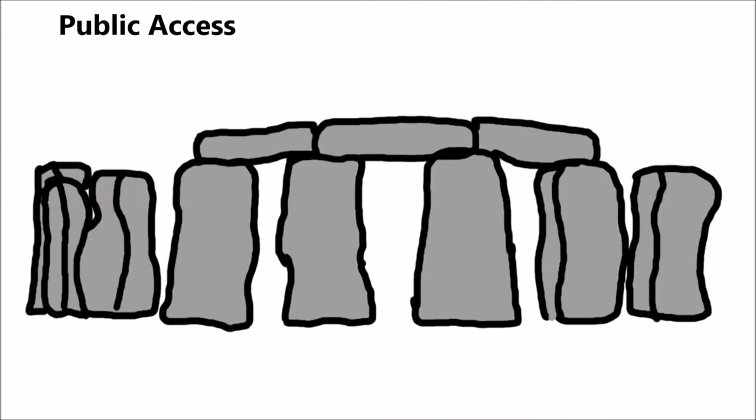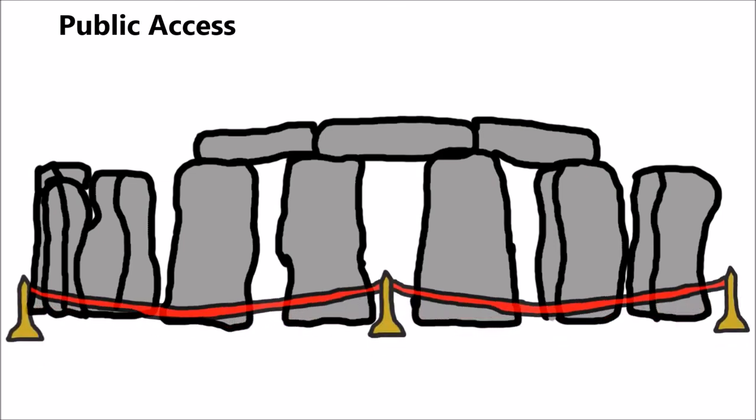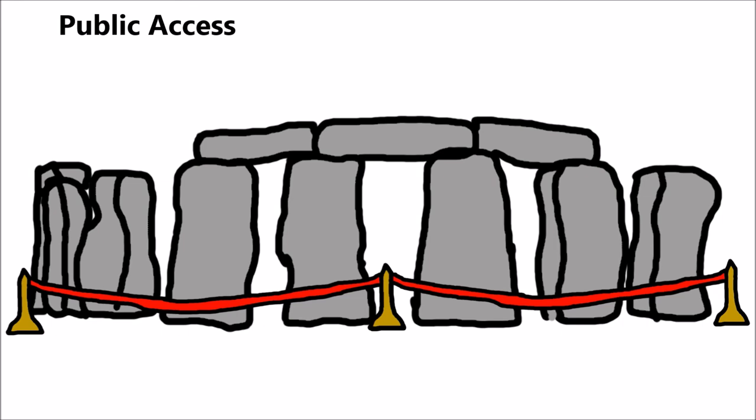Years ago, the public had free reign over Stonehenge, being able to walk up to, touch, and even climb on the stones. However, in 1977, the stones were roped off due to serious erosion. From this point onwards, the public were not allowed to touch the stones, but could walk around the monument from a distance. English Heritage do allow for access to the stones during the summer and winter solstices, and the spring and autumn equinoxes, as well as for special bookings, with locals getting free access. This is not unique to Stonehenge, with many other English Heritage sites having the same protections.